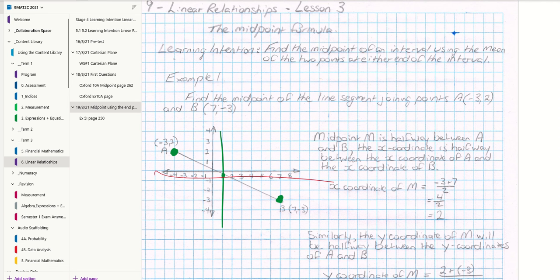So what we found yesterday was midpoint M is halfway between A and B, and we found that the X coordinate of the midpoint is halfway between the X coordinate of A and the X coordinate of B. So what we can do is we can just average those two. So if we average two things, we add them together and then divide by two. So the first coordinate of A is minus 3, and the first coordinate of B is 7. So add them together, minus 3 plus 7, divide by 2 to get the halfway point. 4 on 2 is 2.